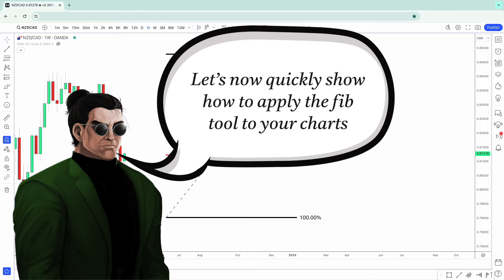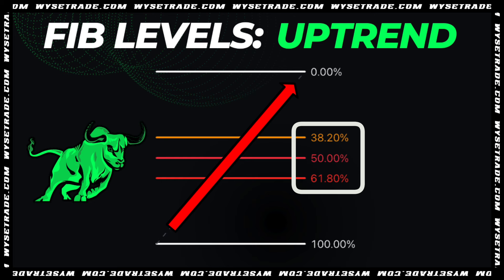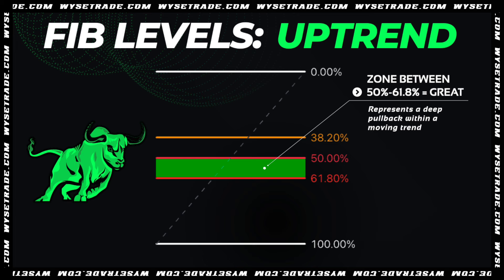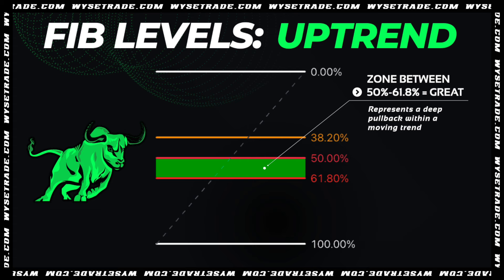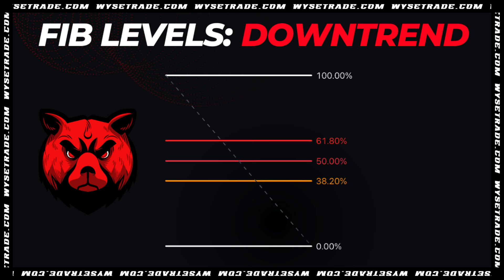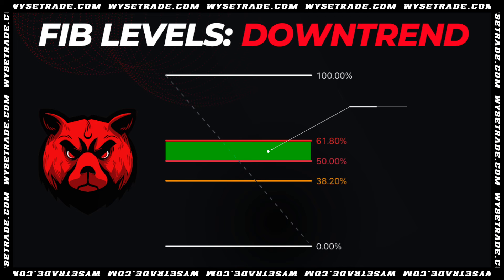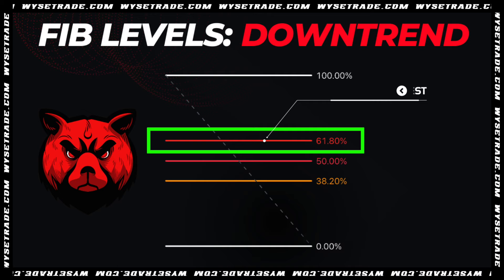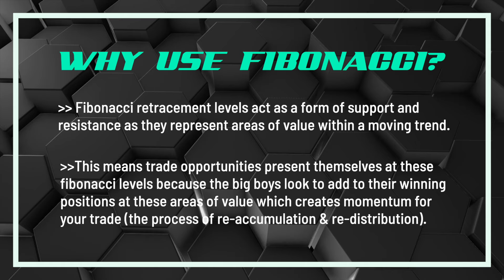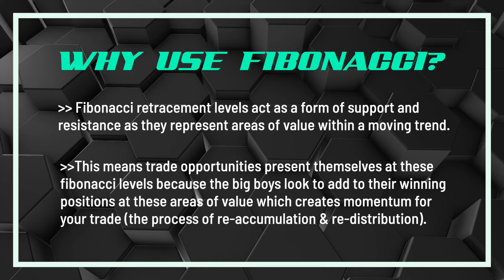Let's now quickly show how to apply the Fibonacci tool to your charts. In an uptrend, the 50% Fibonacci level is what we call good because it represents a deep pullback within a moving trend. The zone between 50% and 61.8% Fib is what we call great. The 61.8% Fibonacci level is what we call best because it represents a very deep pullback. In the opposite direction in a downtrend, the same ratings apply. Fibonacci retracement levels act as a form of support and resistance, representing areas of value where the big players look to add to their winning positions, creating momentum for your trade.